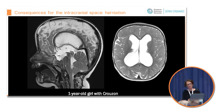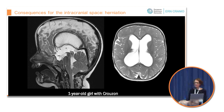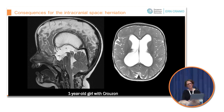As in this example — a girl with Crouzon syndrome — she has large ventricles and hydrocephalus. She has a clear pressure gradient between the third ventricle and the prepontine cistern. You can also see the accentuated flow void in the aqueduct, indicating high CSF velocity.